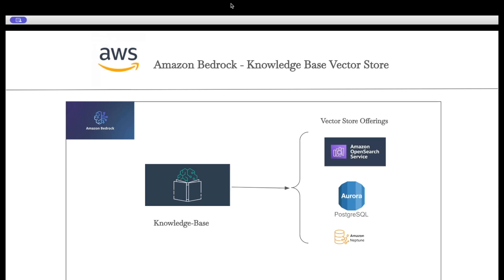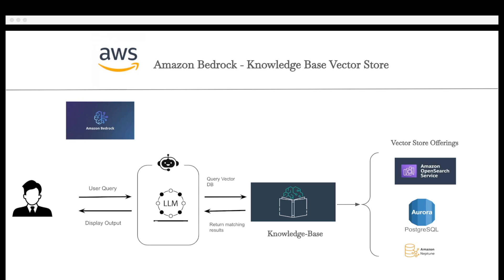A typical RAG workflow looks something like this: you have a chatbot as your front-end client-facing application, which accepts user inputs and queries the vector store to get a semantic match on those inputs. On AWS, this vector store is the knowledge base, which returns the matching results. These results get passed down to the LLM, which converts them back into natural language and displays it to the end users. So that was the flow and the theory — now let's begin with the implementation.